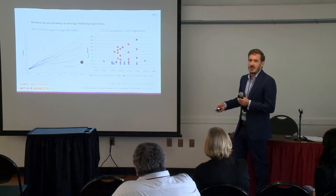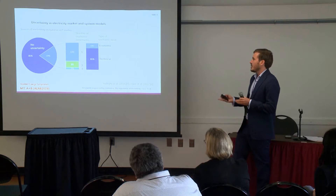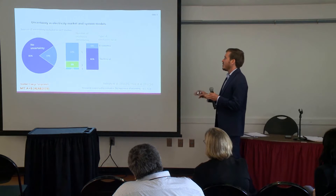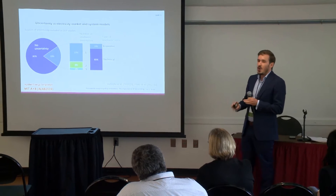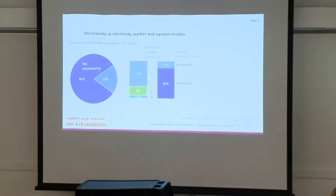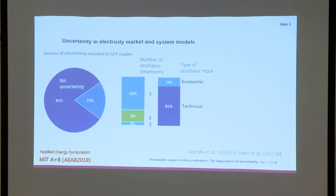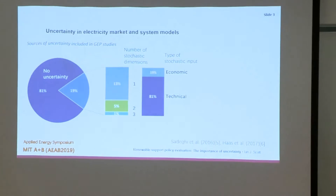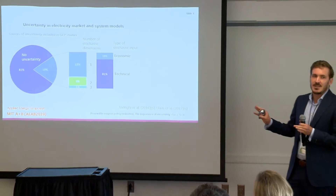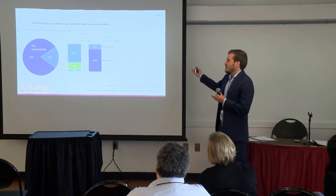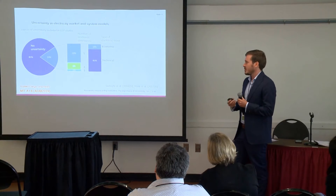The next question is how do we deal with this in our modeling? In a recent review of generation expansion planning studies, only 20% contain some sort of stochastic element, and the vast majority of that — 13% — look at only one stochastic element. There's a bias towards technical uncertainty, like stochastic outages, but if demand is double or half what you expect, that's much more material for your decisions.